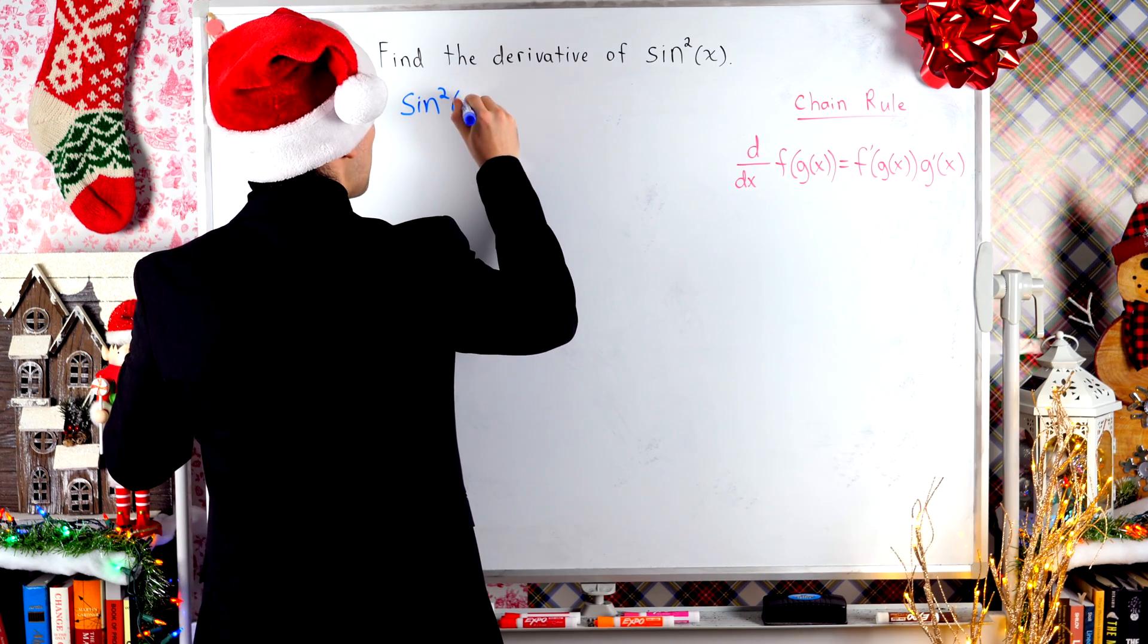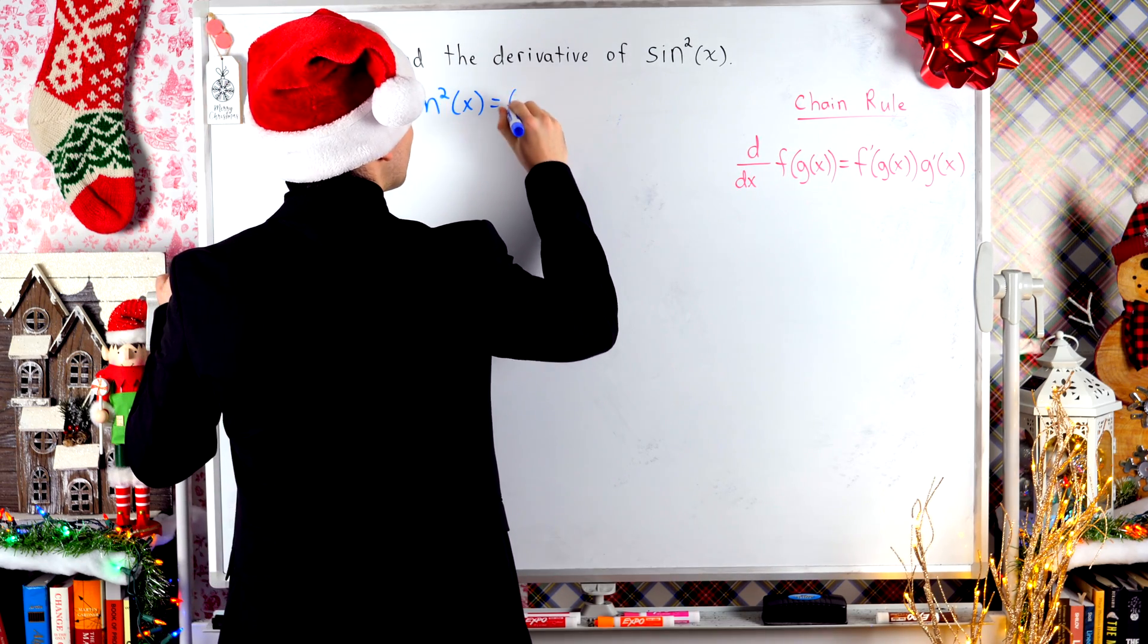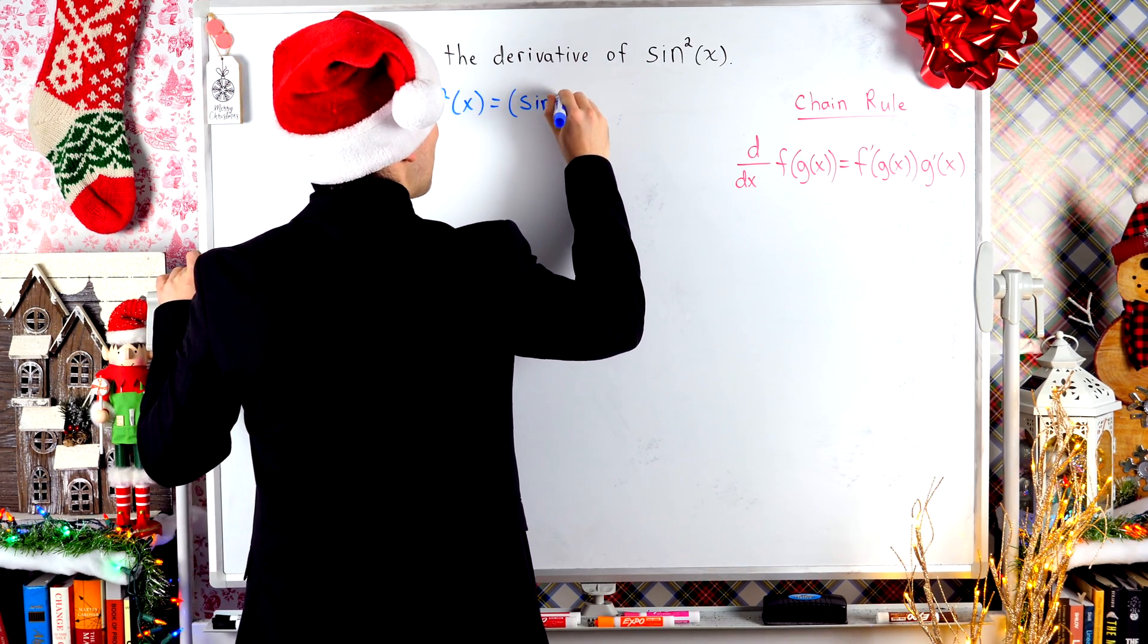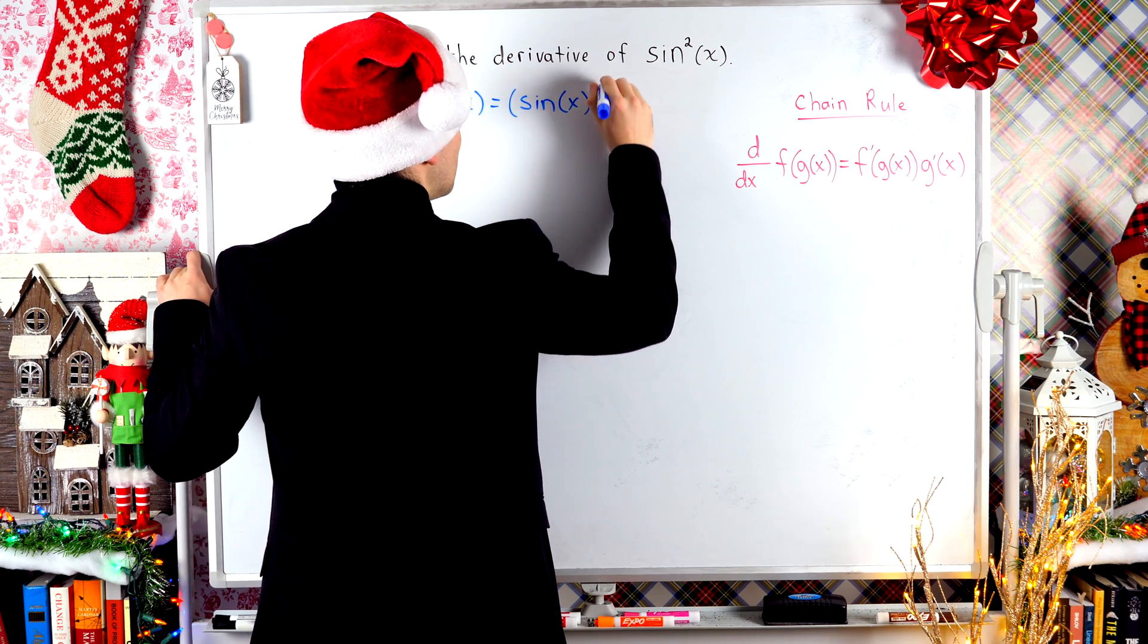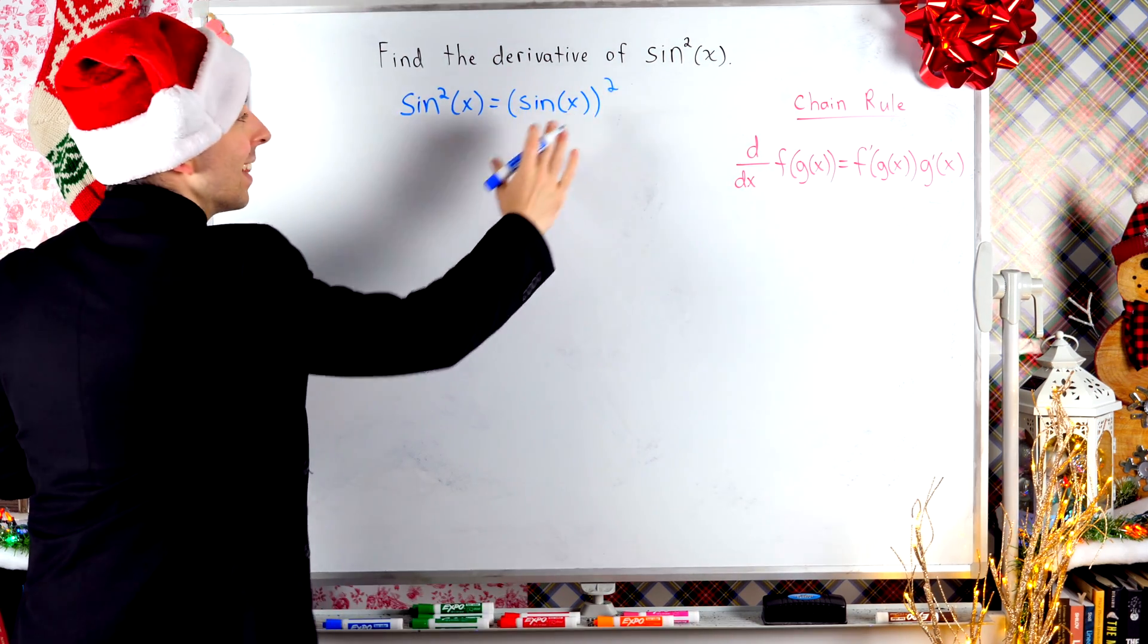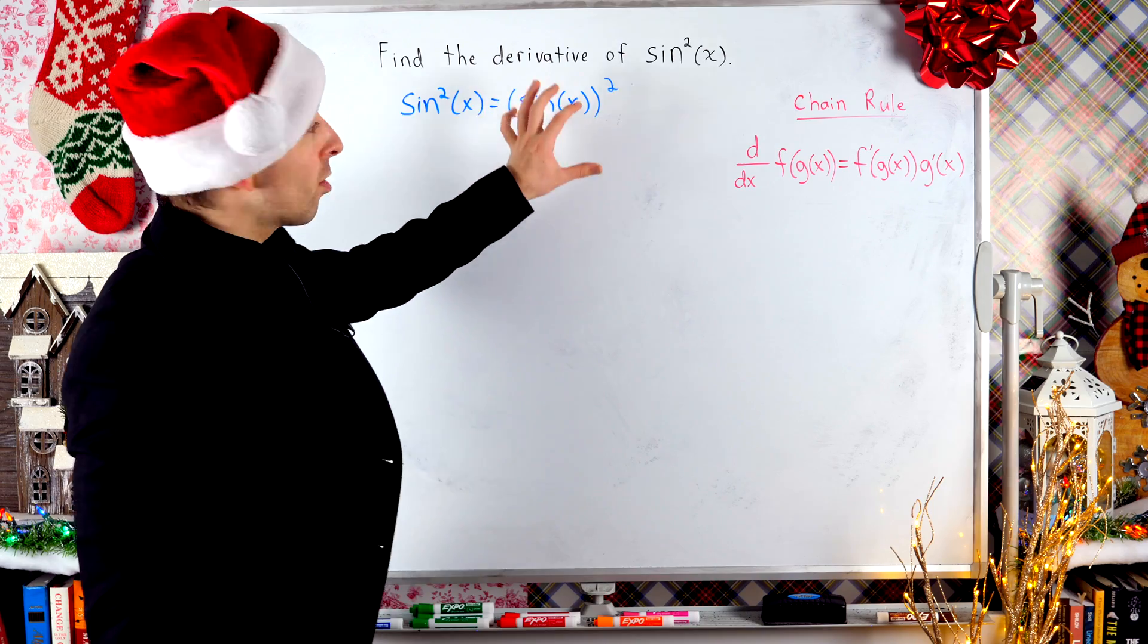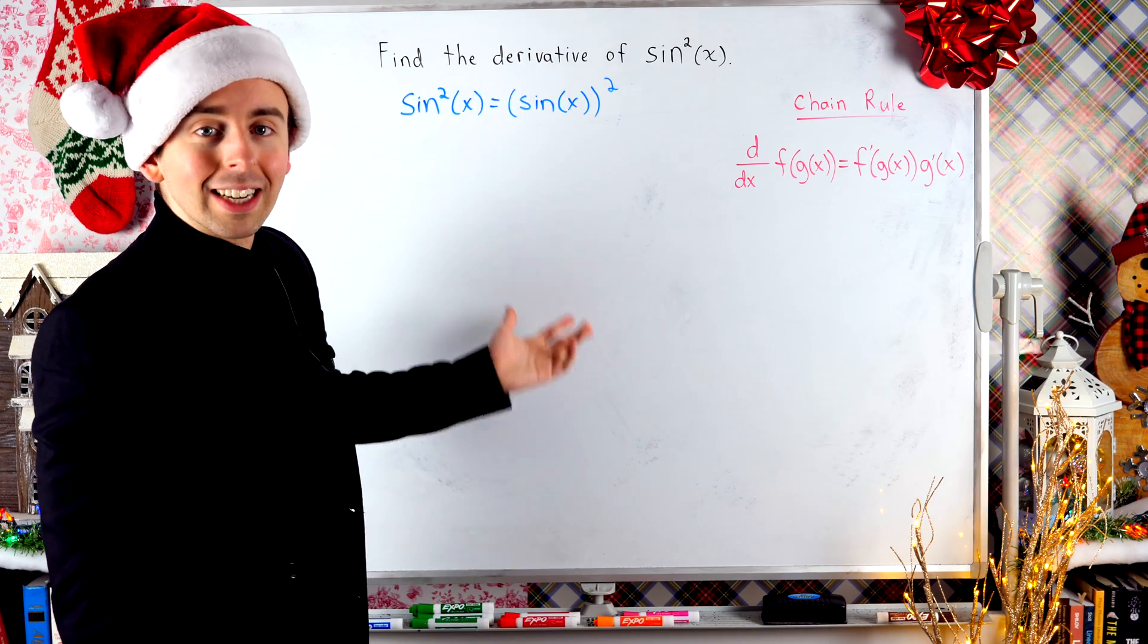Sine squared of x is sine of x times sine of x. For the chain rule, it might be easier if we write it like this: sine of x squared. That's what it is.